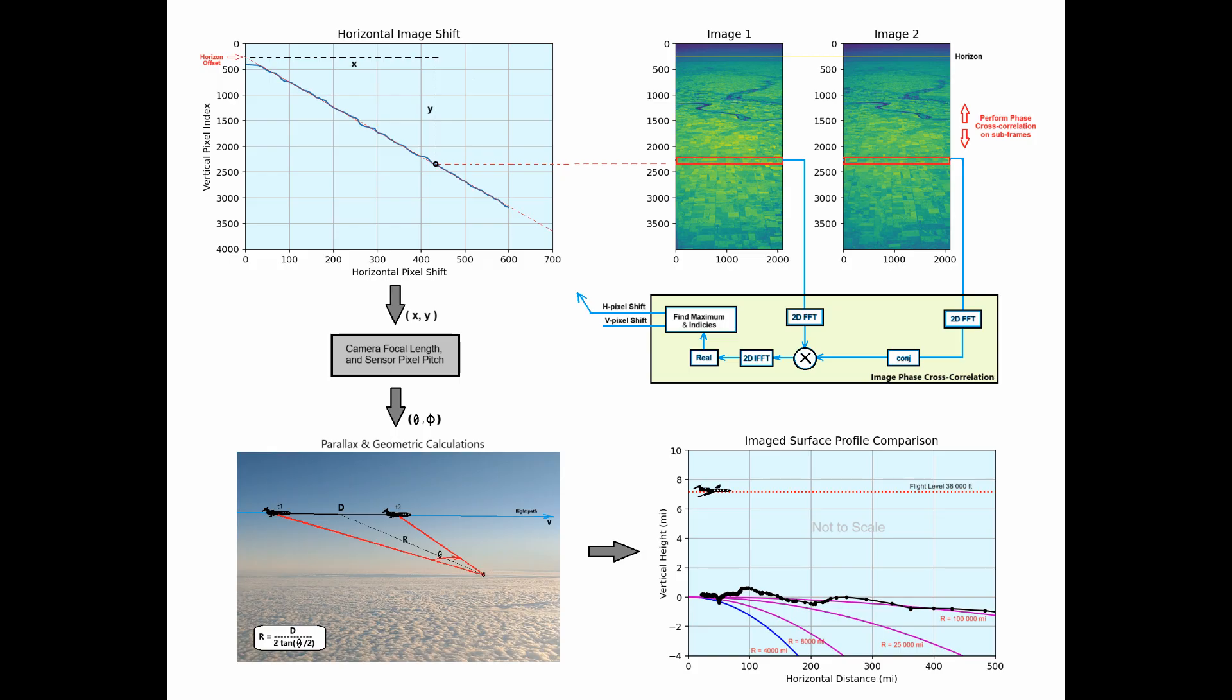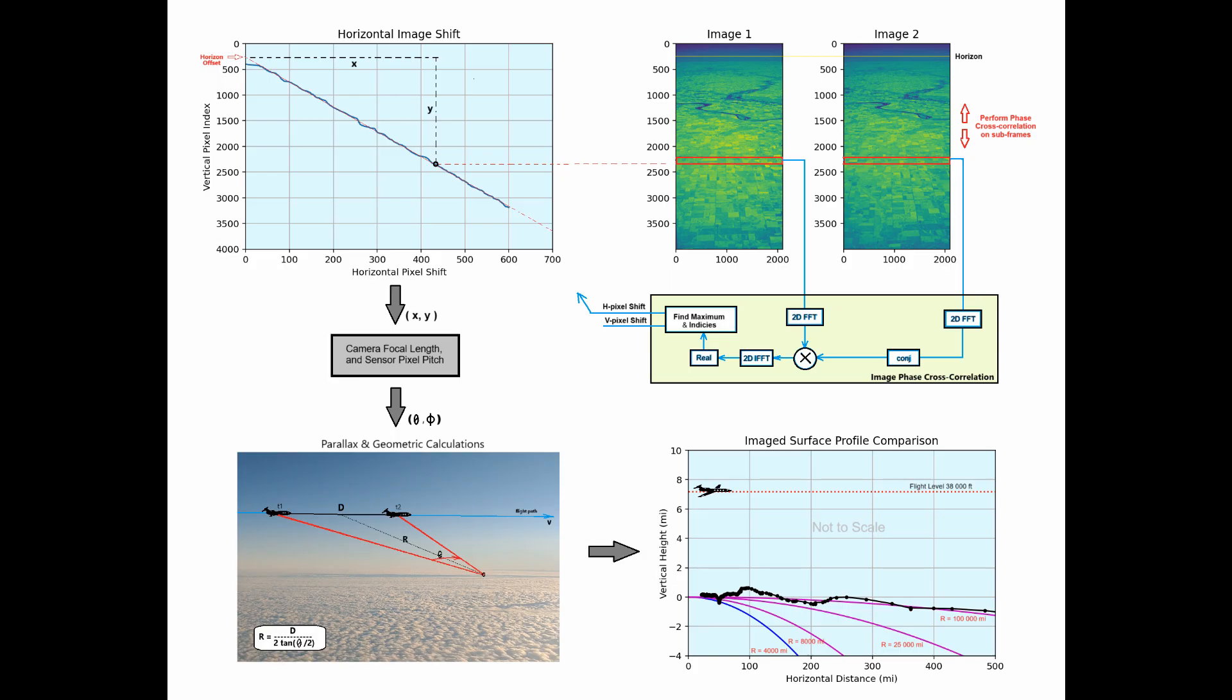Notice here the cross correlation, we get a peak which represents the shift. What's neat about this method using FFTs, we can do sub-pixel correlation and notice how smooth it comes out.